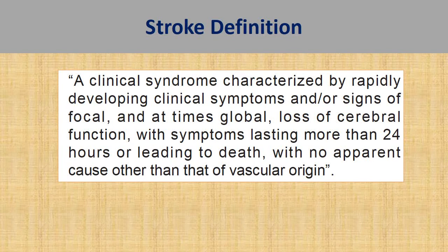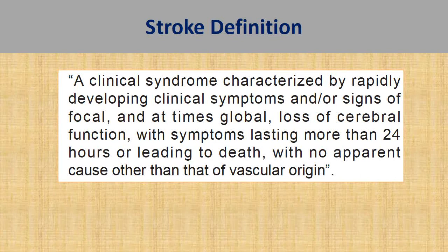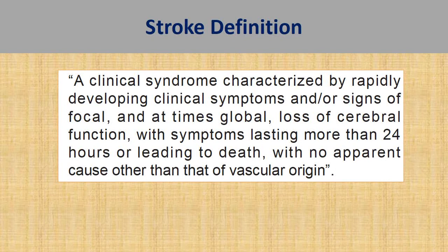This is the stroke definition proposed by the Malaysian stroke CPG, and there are a few key points. First, stroke is a clinical syndrome that develops rapidly — so when seeing a suspected stroke patient, the first task is to determine whether the clinical symptoms are of abrupt onset. Second, the clinical signs largely depend on the area of infarct: a focal area produces focal neurological deficits like hemiparesis or hemisensory loss, while a large volume infarct produces global neurological deficits with impaired consciousness level.